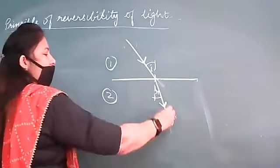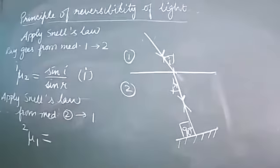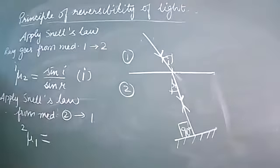Now we apply Snell's law when the ray of light is going from medium two to medium one. We want to write the refractive index of medium one with respect to medium two, which gives us mu_12 equals sine r upon sine i. This is equation number two.